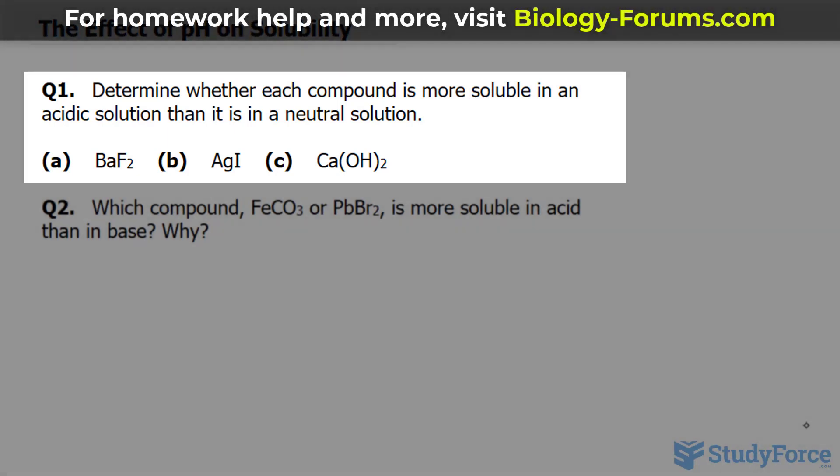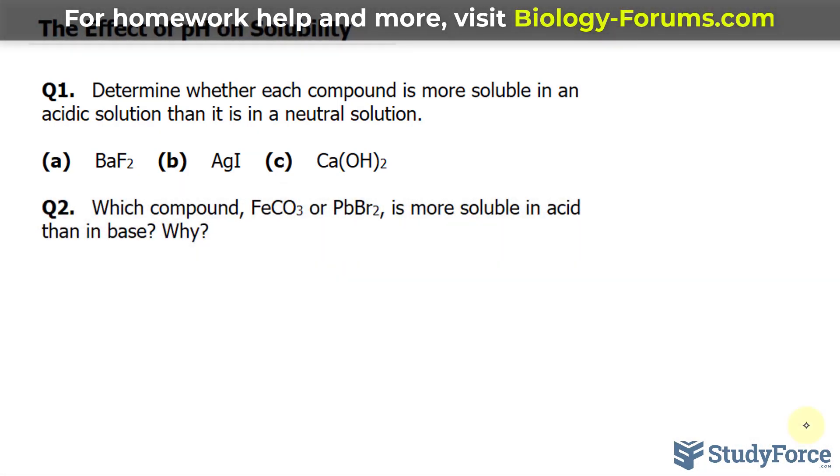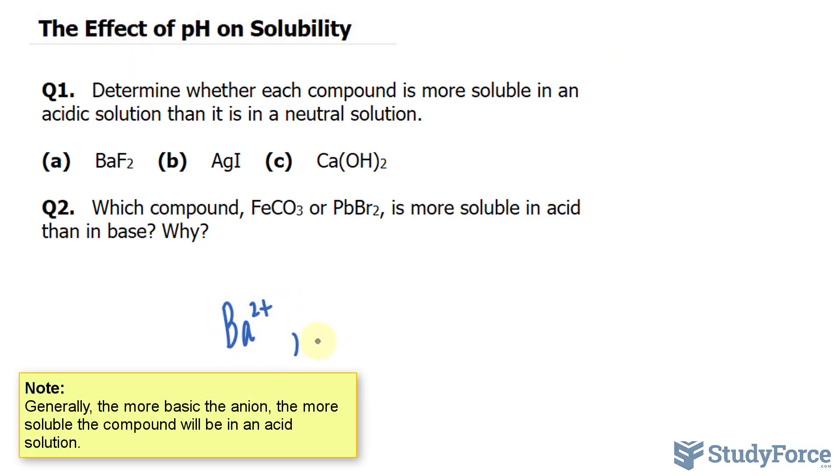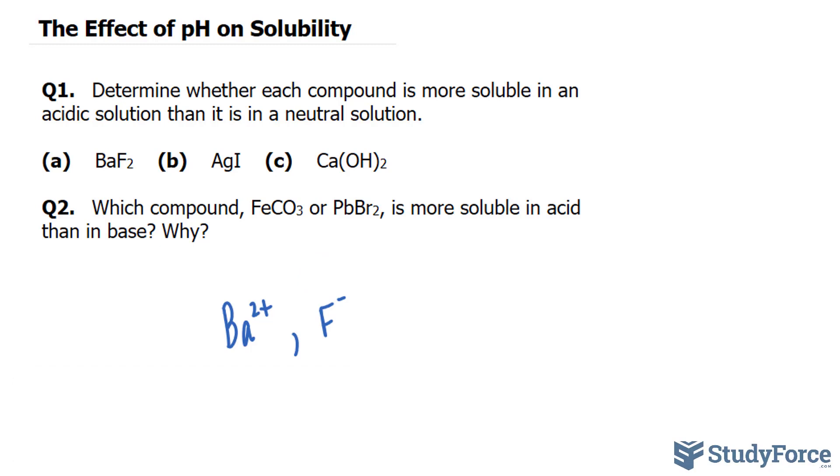Let's begin with barium fluoride. If barium fluoride dissociates, it becomes barium ions and fluoride ions. Focusing on the fluoride ions, this is likely a conjugate base of a weak acid. Think of, for example, hydrofluoric acid, HF.